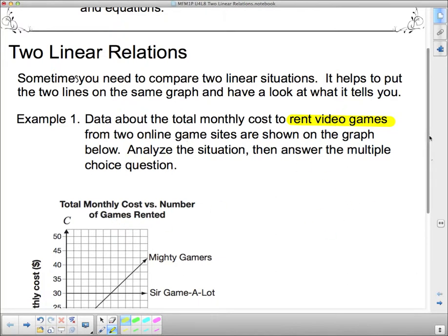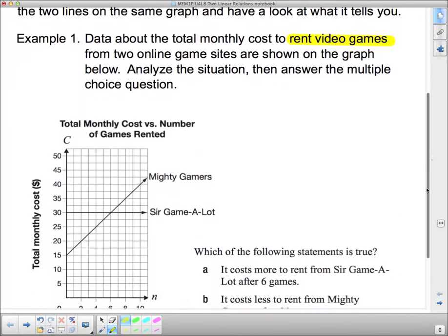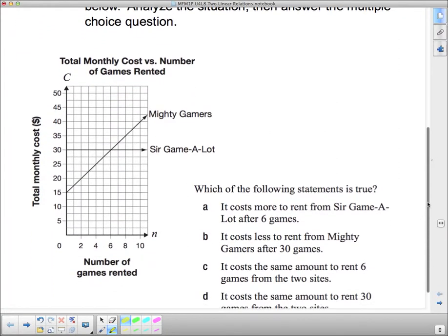Okay, so what we've got here, we've got two video game companies. It looks like we've got Mighty Gamers and Sir Game-A-Lot. What does this graph tell us if we're going to take a look at it? Along the bottom we have the number of games rented and up the side we have the total monthly cost. So let's have a look at what's going on here.